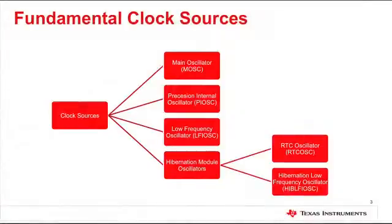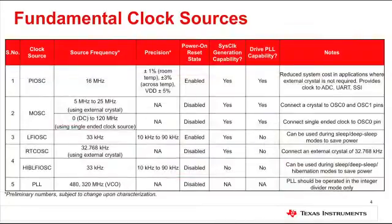Several clock sources are available in the TM4C129X devices. There is a main oscillator, precision internal oscillator, low-frequency internal oscillator, real-time clock oscillator, and a hibernation low-frequency oscillator. Each of these clock sources is unique in terms of its clock generation capability, that is the frequency range and precision. Let us take a look at each of these clock sources in detail and compare their capabilities.